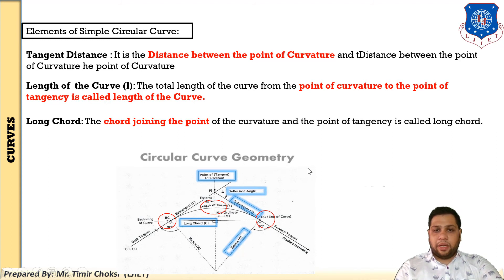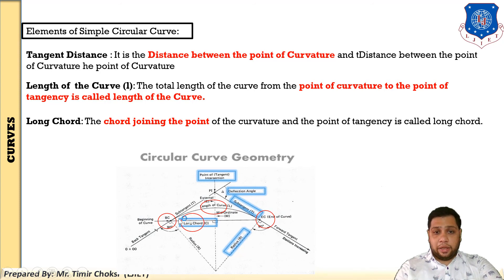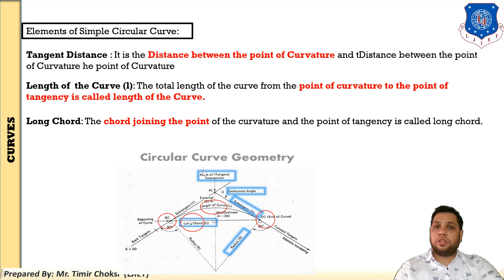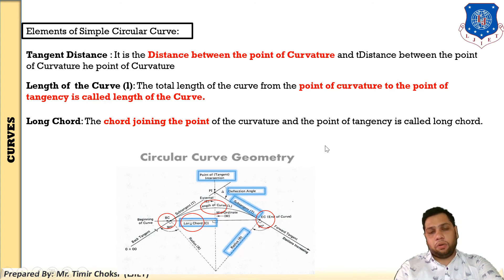Tenth, long chord: the chord joining the point of curvature to the point of tangency is called the long chord. This is the straight distance between the two ends of the curve — not the circular arc distance but the straight chord distance. The cord joining the point of curvature and the point of tangency is called the long chord.